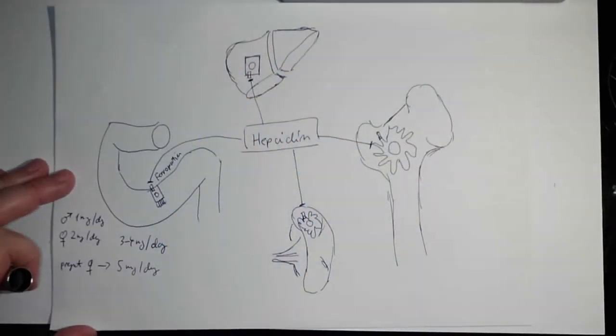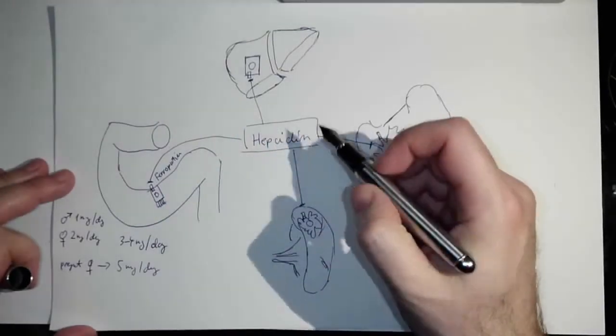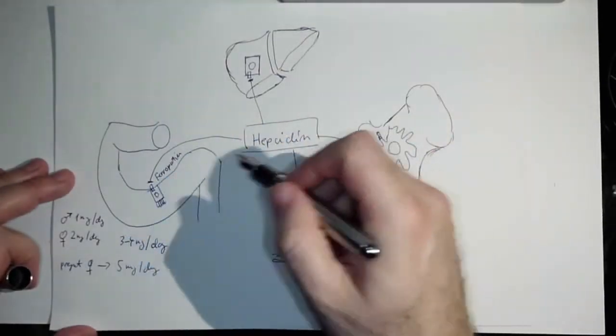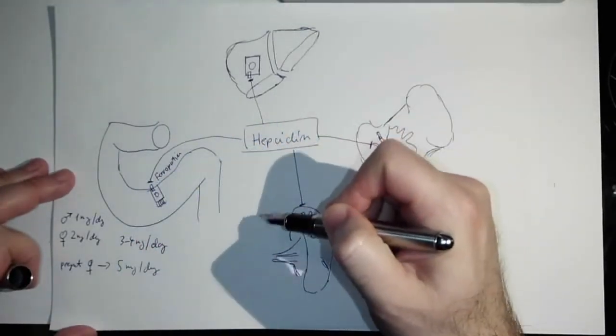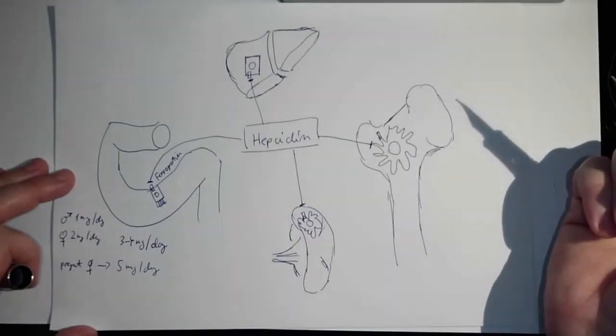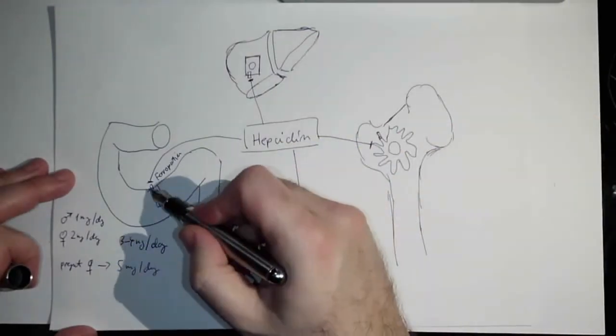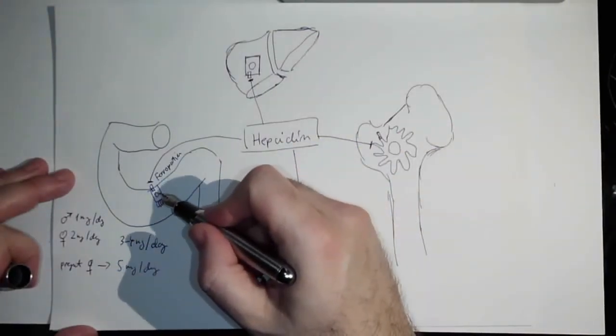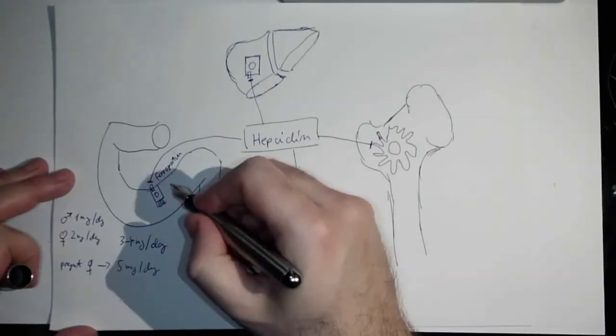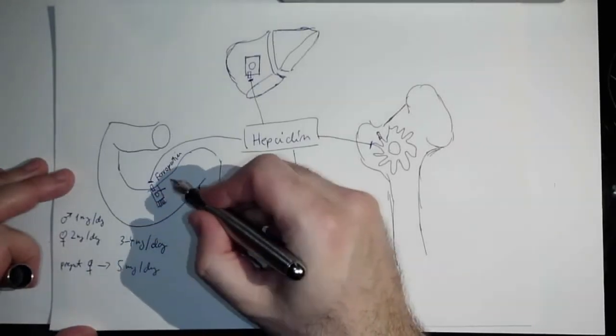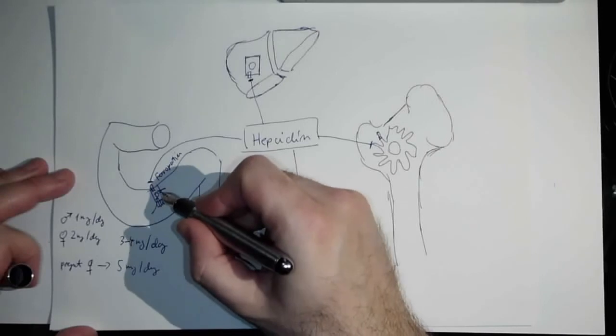Let's go back. If everything works, hepcidin very tightly controls the absorption. If we have lots of iron in our body, hepcidin will block the absorption and the iron will stay in the enterocytes.